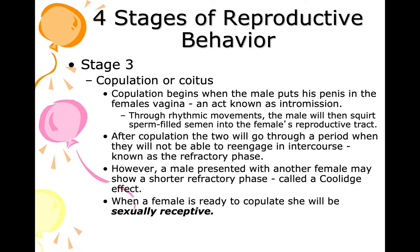Stage three is copulation or coitus. Copulation begins when the male puts his penis in the female's vagina, an act known as intromission. Through rhythmic movements, the male squirts sperm-filled semen into the female's reproductive tract. With the baboons, he would move them a couple of times and push them off. He bred all four or five females two or three times, not re-breeding the same one immediately after intercourse.